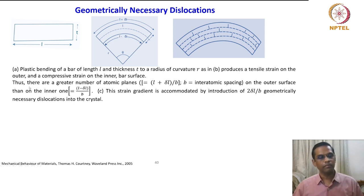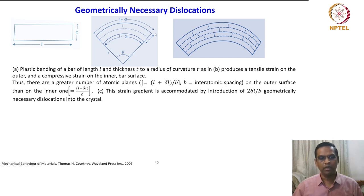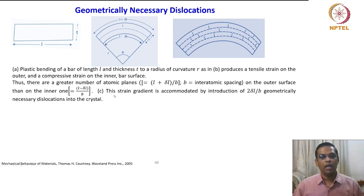That means there are a greater number of planes — (l plus delta l) / b — where b is the interatomic spacing — on the outer surface than on the inner surface, which has (l minus delta l) / b planes. This strain gradient is accommodated by introduction of 2 delta l / b geometrically necessary dislocations into the crystal.